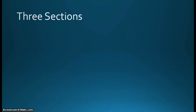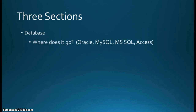I'm going to divide Access into three basic sections. These different sections really integrate with one another, but it's helpful to organize and cover them in some sort of order. The first is the database — this is where your data is actually stored. So what is a database and where does your data go? That could be any number of different types of database systems.